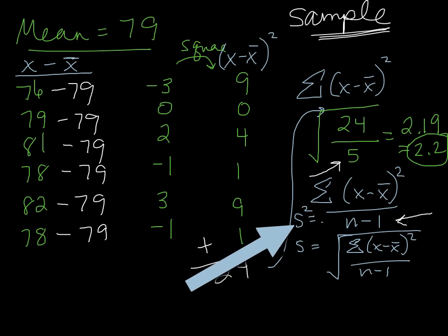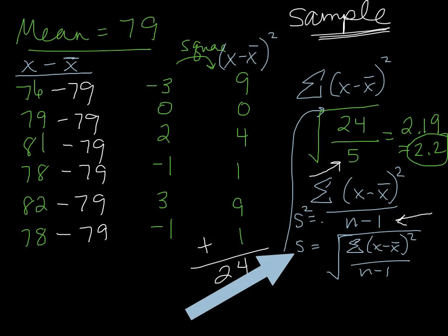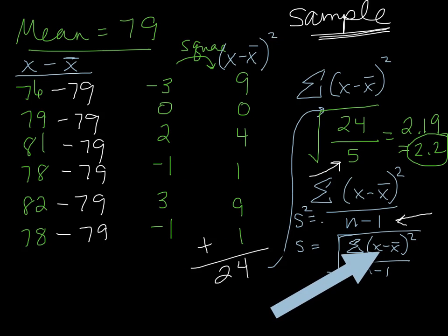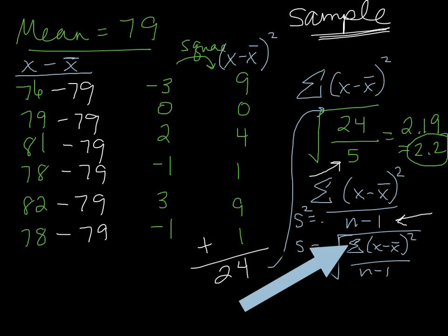Here's what it looks like. Remember, s squared is your variance. We're using the symbol s for standard deviation because it is a sample. So we did the numbers minus the mean. We squared all those numbers. We added them together. That's how we got 24.